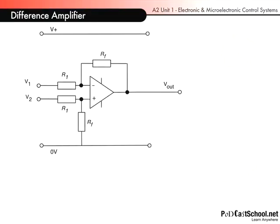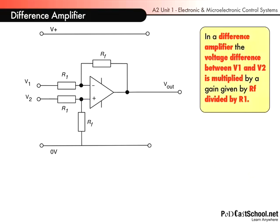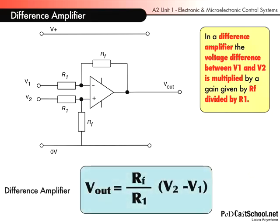Last but not least today we have the difference amplifier. It uses feedback resistor RF and input resistors R1, and it also has another feedback resistor connected to the non-inverting input down to ground. In a difference amplifier, the voltage difference between V1 and V2 is multiplied by a gain given by RF divided by R1. So the gain A equals RF divided by R1, and Vout is that gain multiplied by the difference between V2 and V1. In some ways this is almost back to the open loop gain, except that we can control the gain this time by the feedback resistors RF and R1.